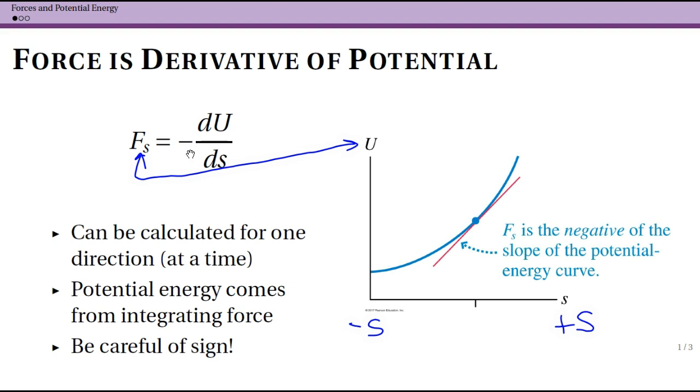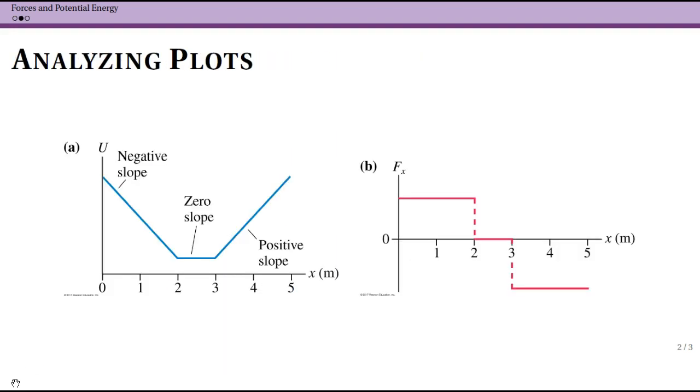One way to check this with yourself is that potential energy for gravitational potential energy increases as you go up; however, the force pulls down. So that's why there's this minus sign here, and that can be a little bit tricky.